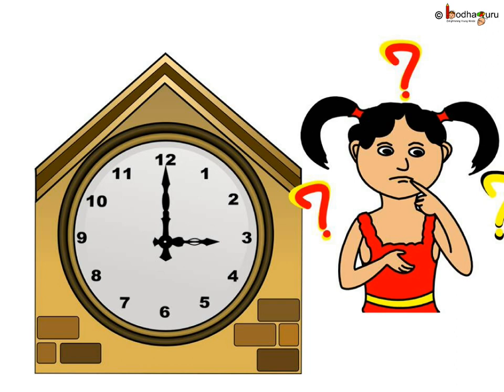Remember, the hands of the clock always move in the forward direction — from 1 to 2, 2 to 3, 3 to 4 and so on. They don't move in the backward direction. The same clock can show you the time during day as well as night. Let's take some examples.